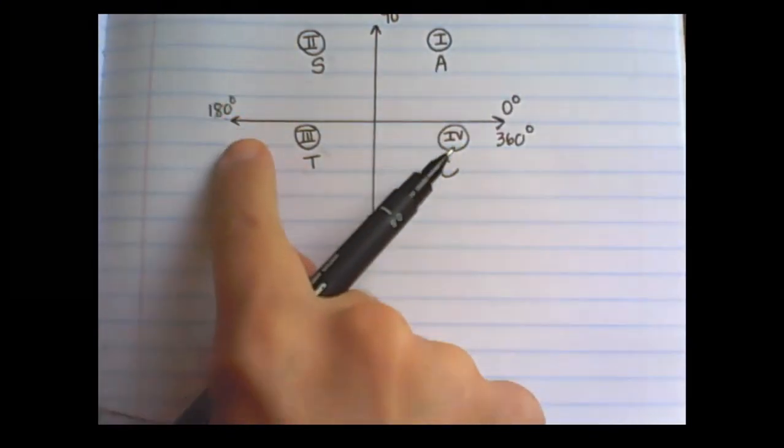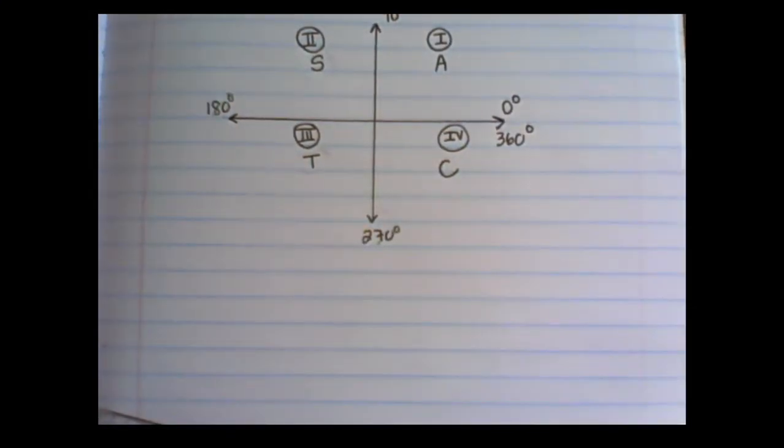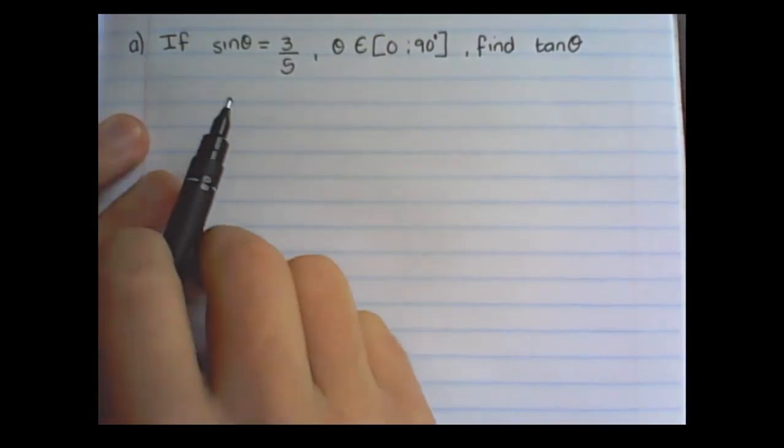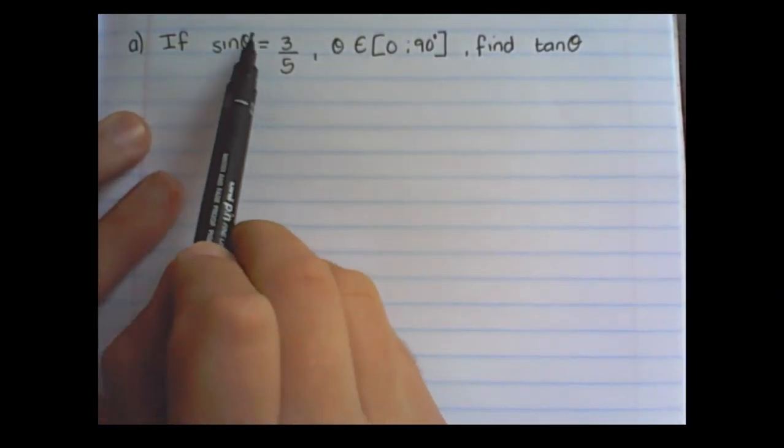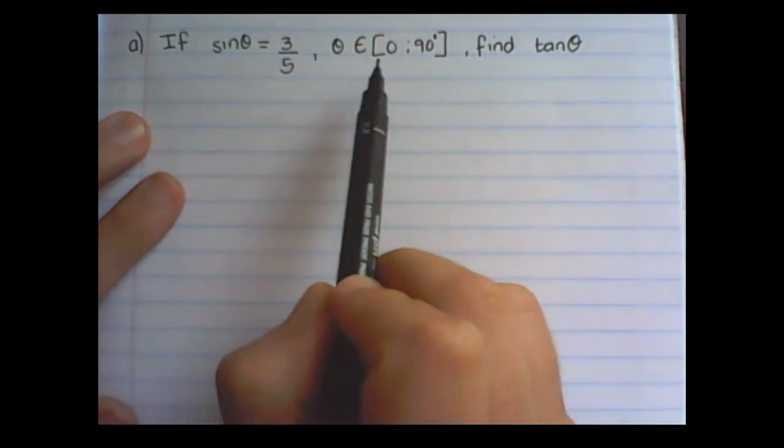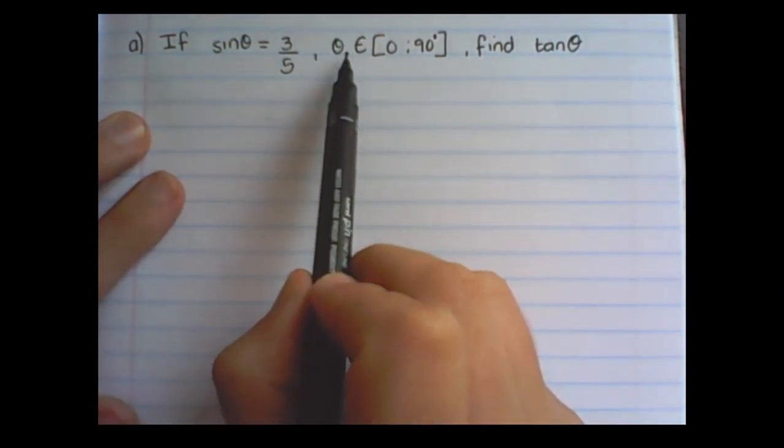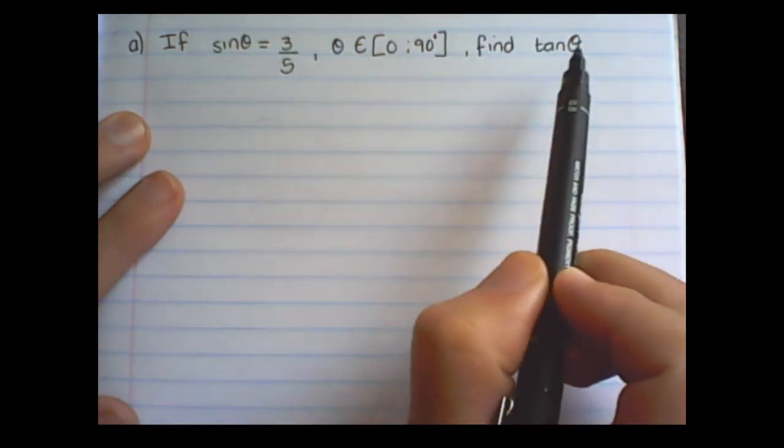Now in this video we are going to learn how to solve trig ratios without a calculator. In our first example we have sin θ is equal to 3 over 5. θ is restricted between 0 and 90 degrees and we want to find tan θ.